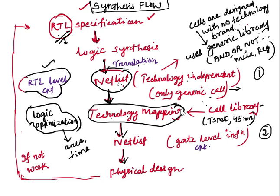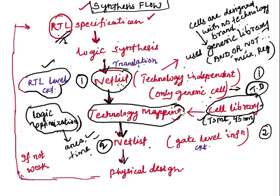In the technology mapping step, the logic is optimized further. We have the RTL code, it gets synthesized and translated into a netlist of basic components and interconnections. Then with the technology-dependent library — for example, TSMC 45nm — the synthesis tool optimizes the design in terms of area, timing, and performance, and generates another more-optimized netlist.